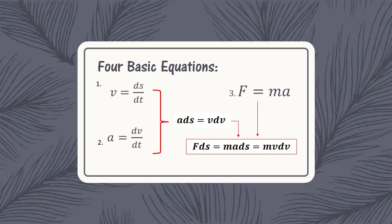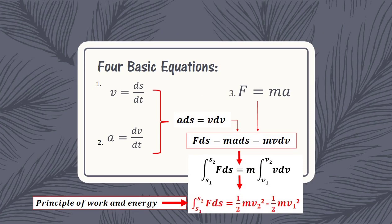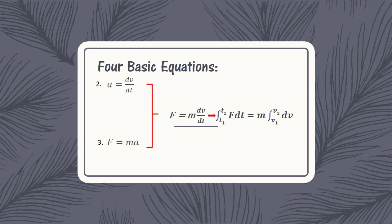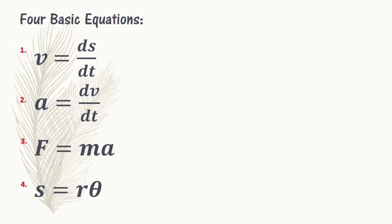From the newly derived equation, we incorporate it with Newton's second law of motion. Then let us integrate it so we can derive the principle of work and energy equation. Next, if we combine second and third equations, then integrate both sides, we can get the equation for principle of linear impulse and momentum. So by combining the four basic equations, we can derive a series of formulas.